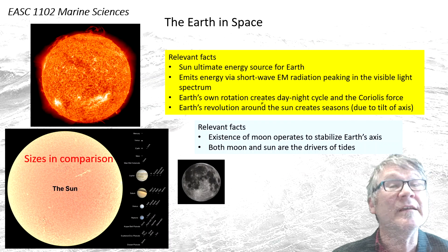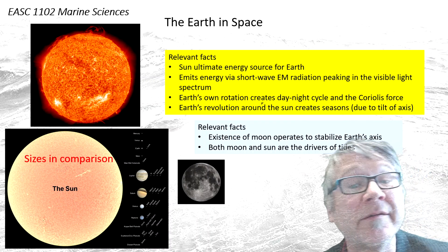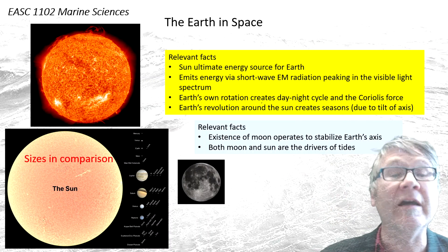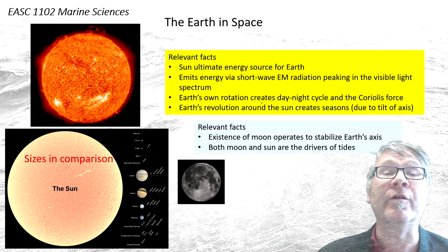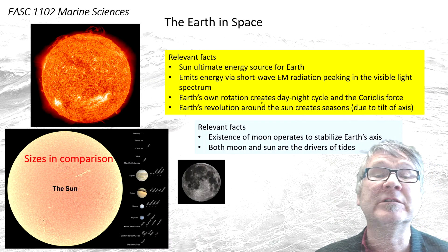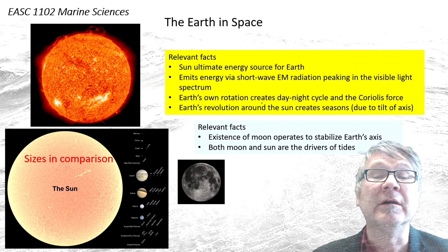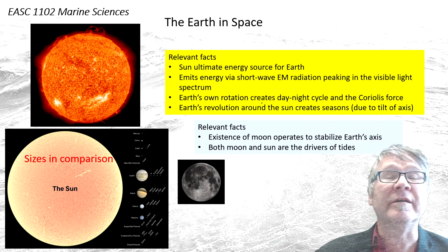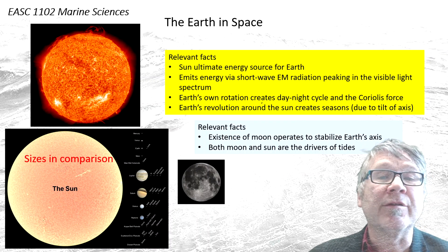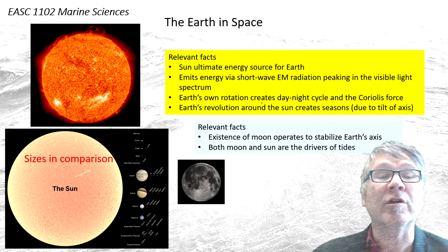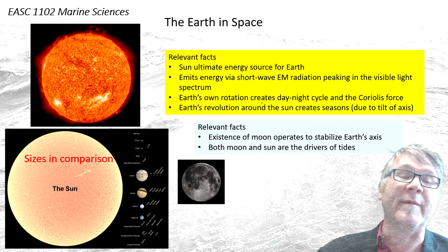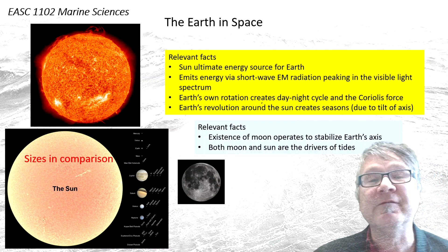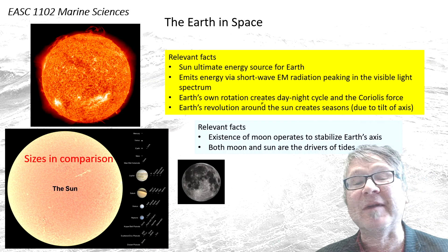The Sun is the ultimate energy source for all life on Earth, and the Sun emits energy through shortwave electromagnetic radiation, peaking in the visible light spectrum.